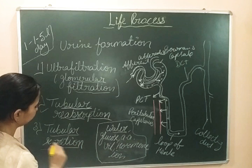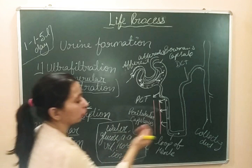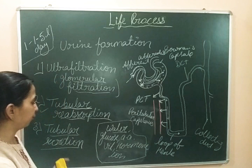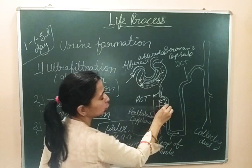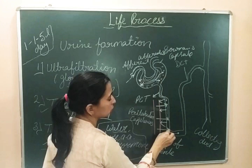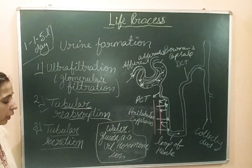After tubular reabsorption, the third step is tubular secretion. Tubular secretion is the process that is just opposite to tubular reabsorption. In tubular reabsorption, substances move from the tubules into the capillaries. But in tubular secretion, the blood capillaries release substances back into the tubule parts. The substances present in blood that are not required get secreted inside the tubules again. That is why it is known as tubular secretion.